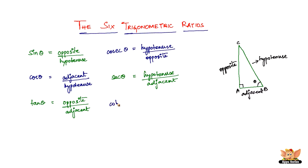The last one is cot theta, which is the reciprocal of tan theta. The full form is cotangent theta. Cot theta is adjacent divided by opposite. These are the six trigonometric ratios — the most basic things to know when starting trigonometry. They are all related to a right-angled triangle with angle theta. The opposite and adjacent sides depend on where theta is, but the hypotenuse is always the longest side, also related to the Pythagorean theorem.